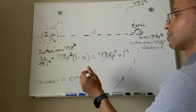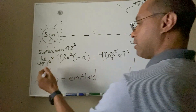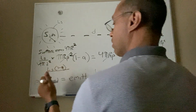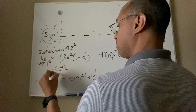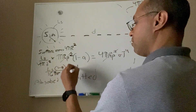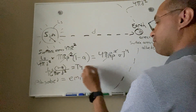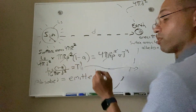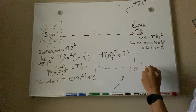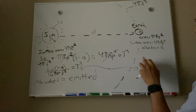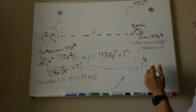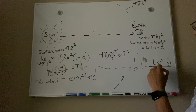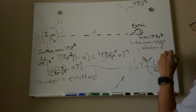After grouping all terms, you get L_s · (1 − a) / (16π·σ·d²) = T⁴. Taking the fourth root of both sides, you get T = [L_s · (1 − a) / (16π·σ·d²)]^(1/4). That is the temperature equation expressed in terms of solar luminosity.